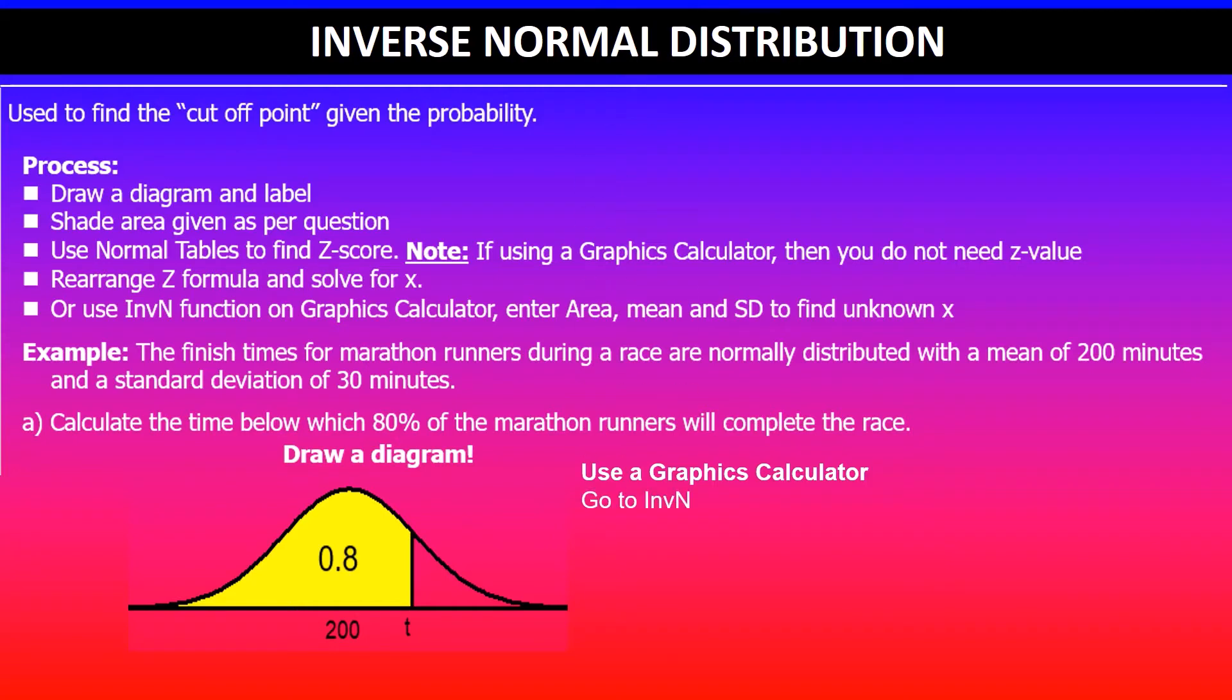You'll need to go to inverse normal. Just note that the area is shaded on the left hand side below T value. Remember that the area denotes probability, so that's 0.8.